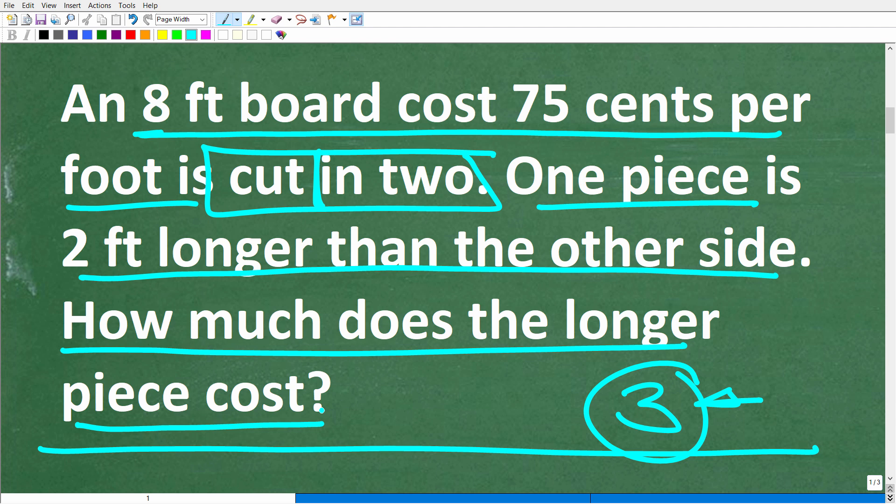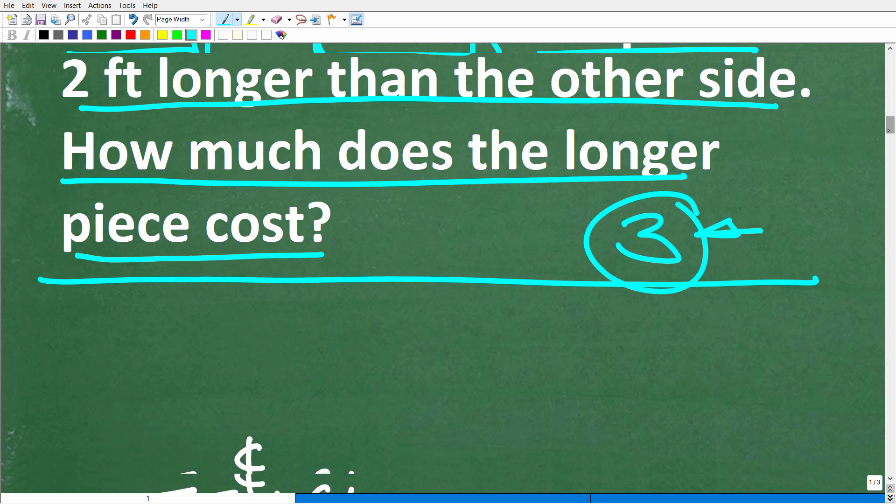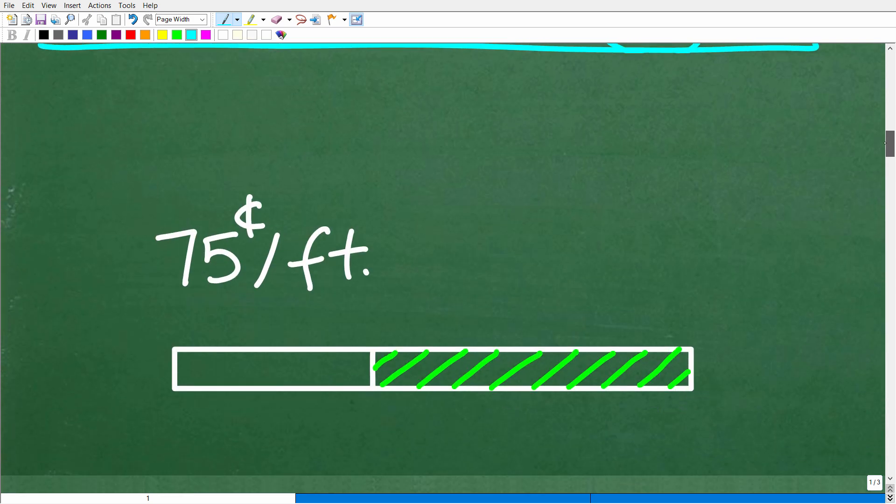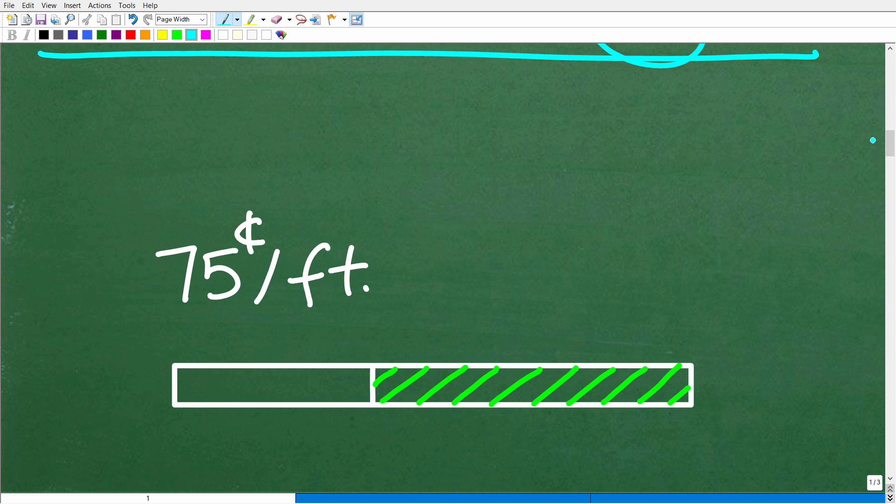All right, so I'm thinking about a board that I can kind of sketch out here and then kind of put this information next to that little sketch and then think about how can I solve this problem. All right, so here is an 8-foot board. I'm going to cut it into two pieces. So here is the short side, and here is the long side.